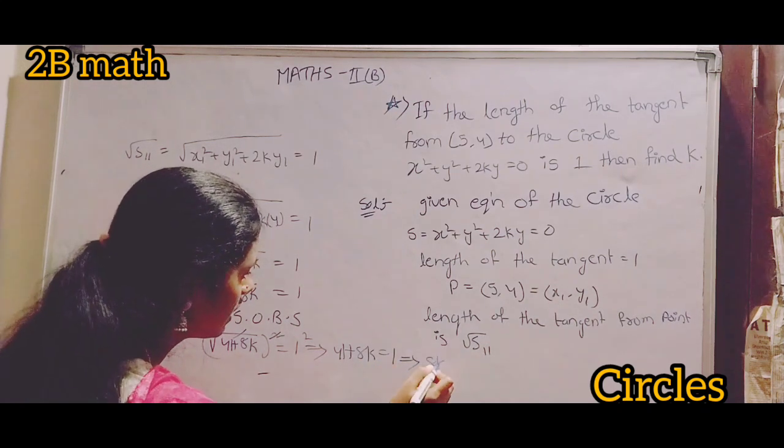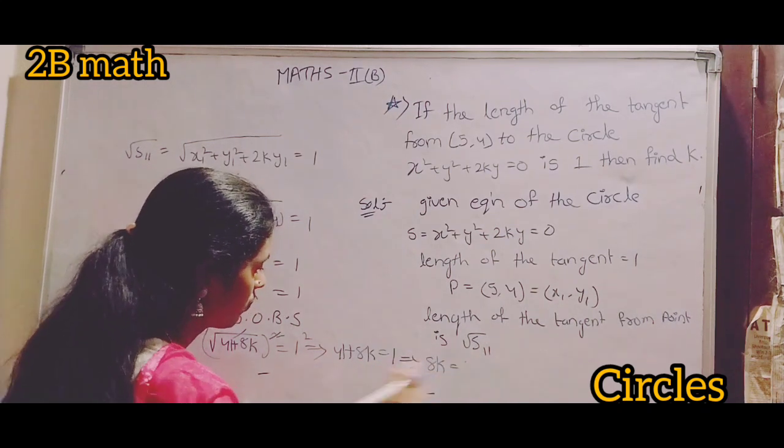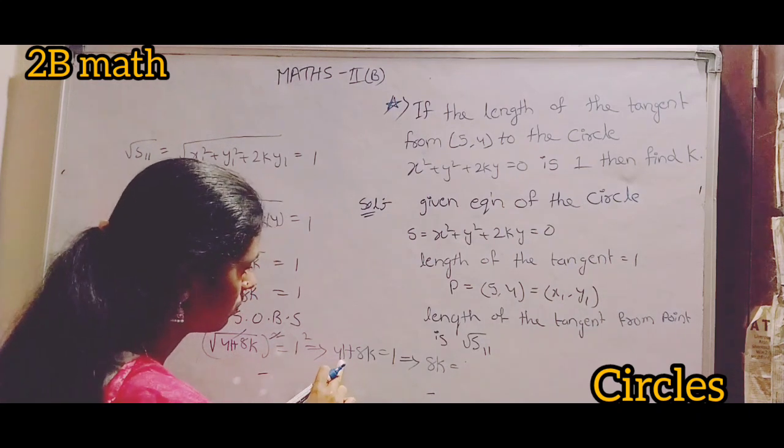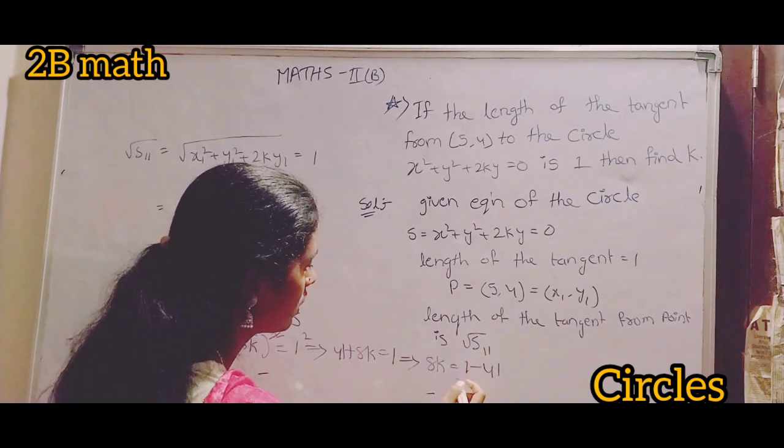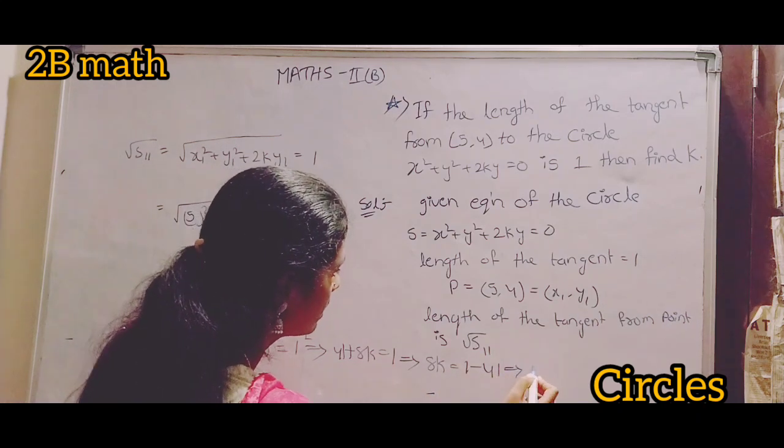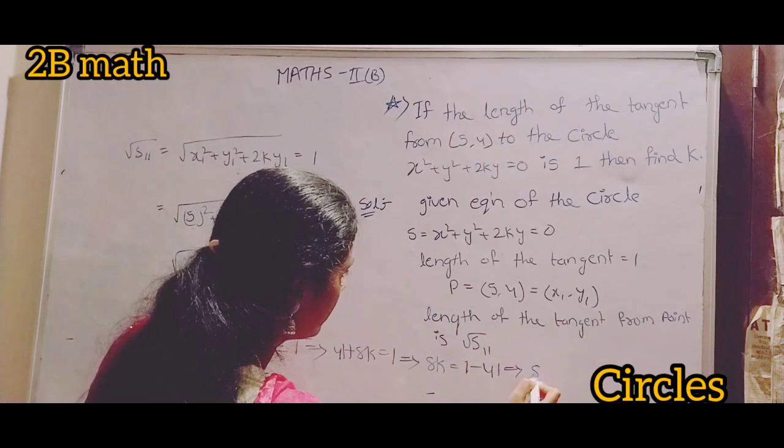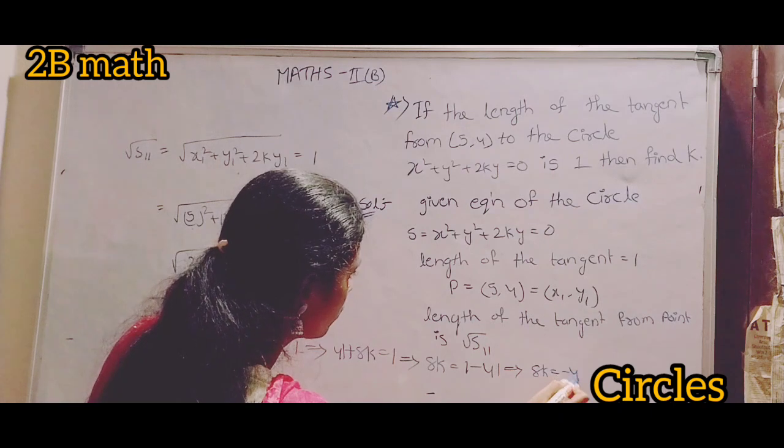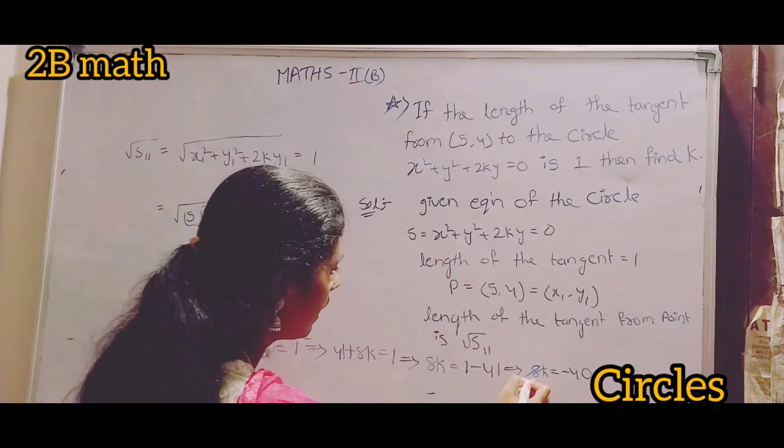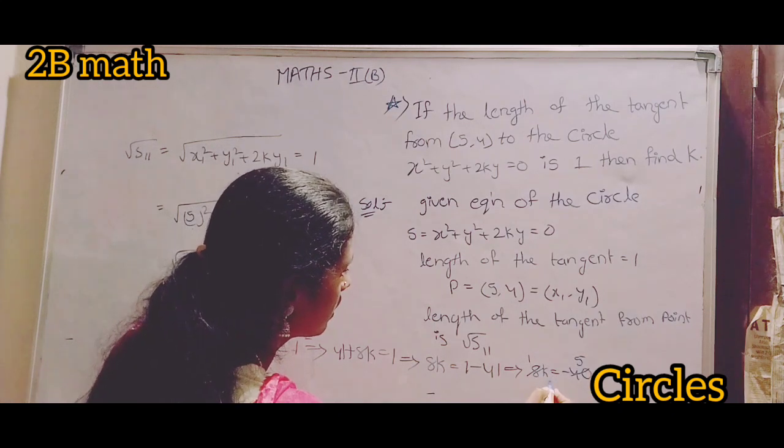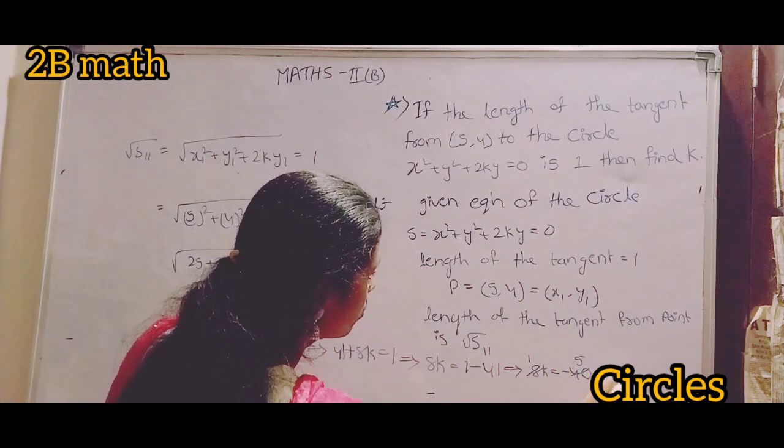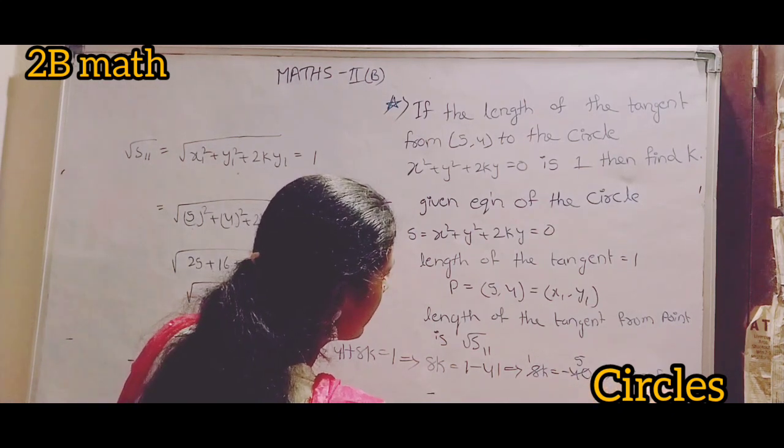8k = 1 - 41. 1 - 41, 8k = -40. Therefore k = -5.